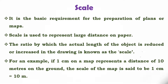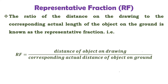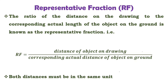Now let us see the second important part, that is Representative Fraction, RF. Representative Fraction RF is the ratio of the distance of an object on drawing to the corresponding actual distance of the object on ground. Here, we take the distance on drawing as unit distance. So RF equals distance of object on drawing, and both distances must be in the same unit.